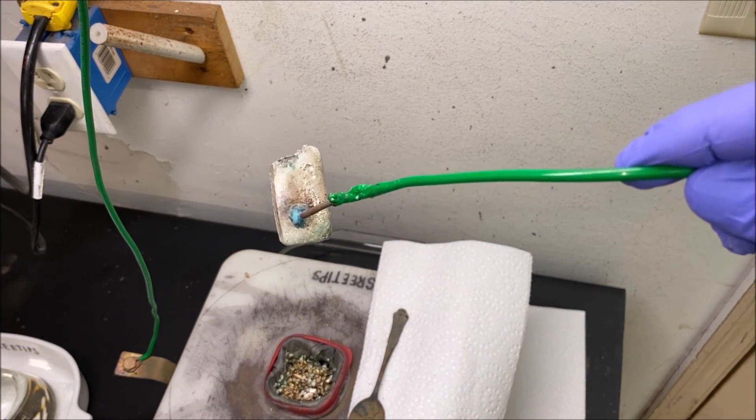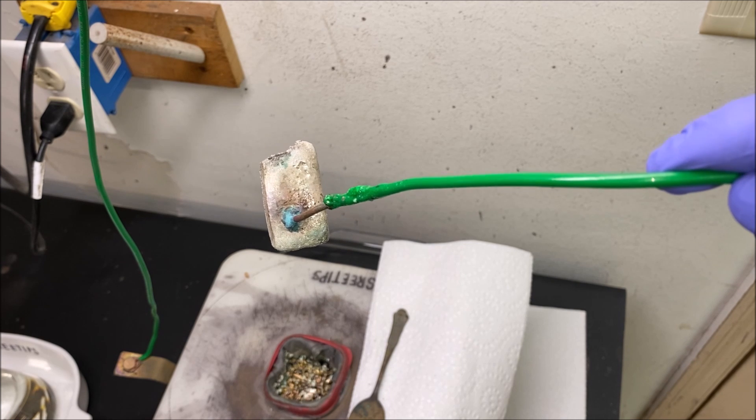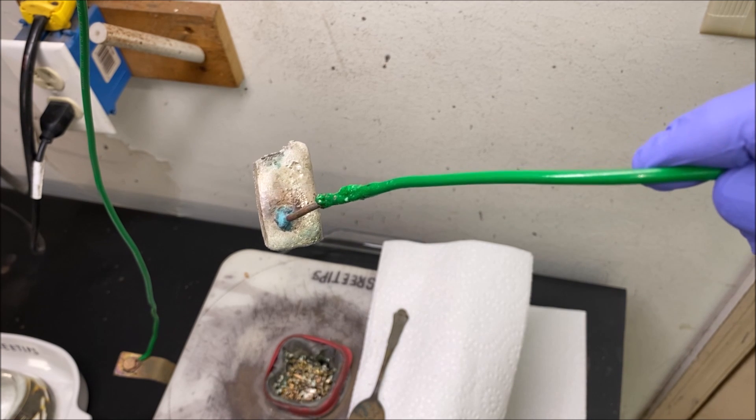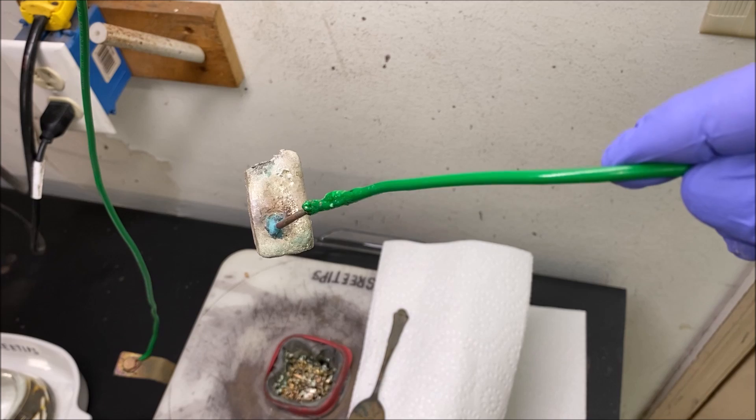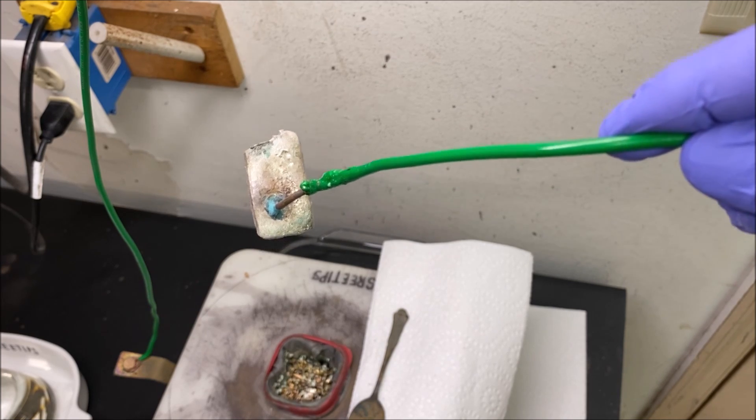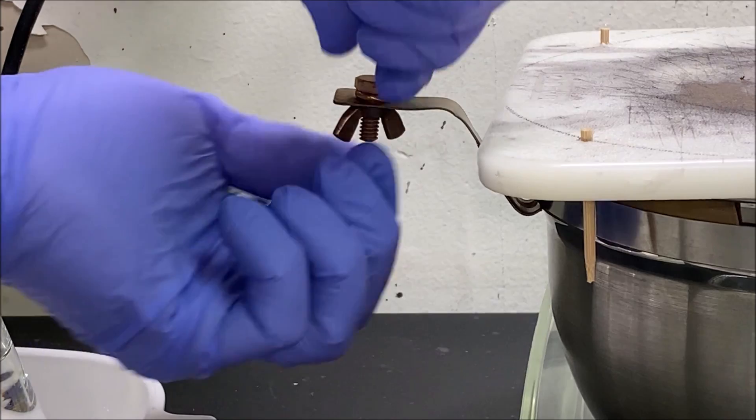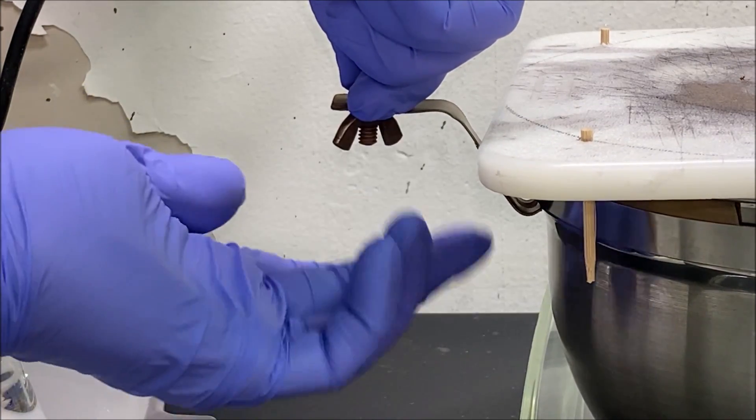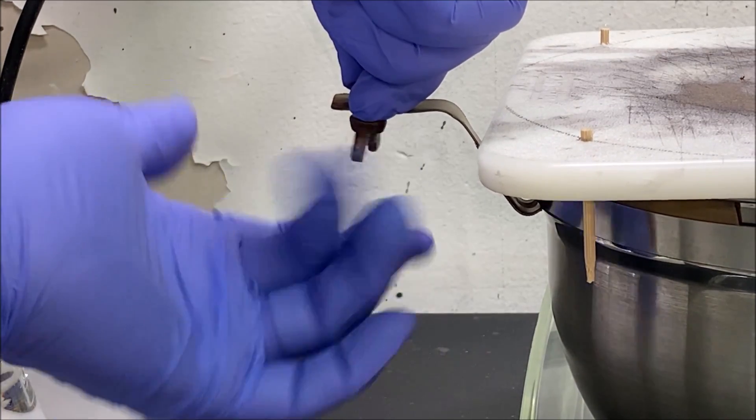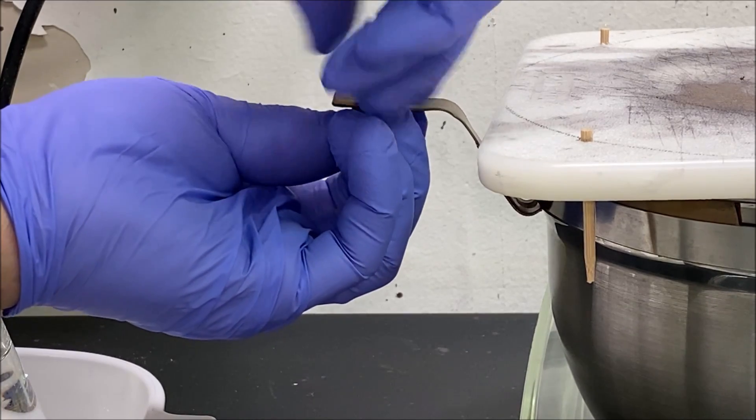You can see there's the anode bar. It's partially dissolved and we can reuse this anode bar for the next run of the silver cell. Now I'll disconnect the cathode connection. It's just a wing nut with a brass screw.